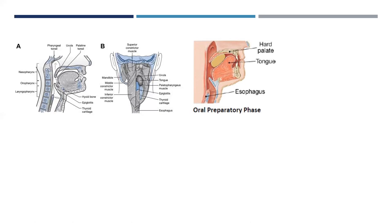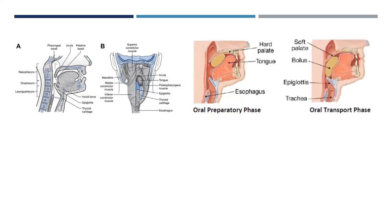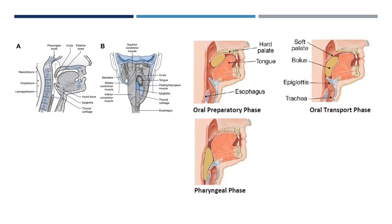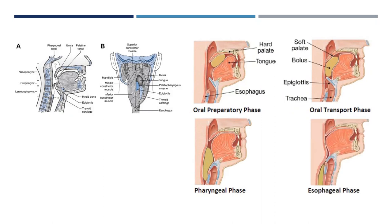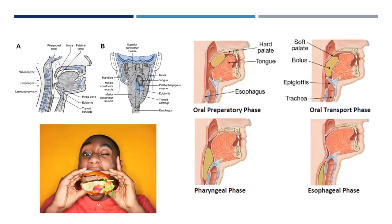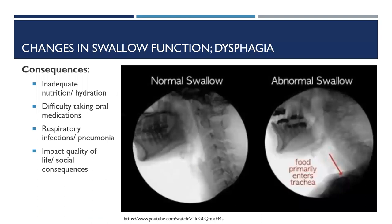We think about swallowing in four phases: the oral preparatory phase, which involves putting food in your mouth and chewing it to create a bolus; the oral transport phase, moving the bolus from the oral cavity into your pharynx; the pharyngeal phase, which involves airway clearance and beginning to open the esophagus; and finally the esophageal phase, where food moves through the esophagus and arrives in the stomach. For the purposes of our research and this talk, we'll focus on the first three phases.